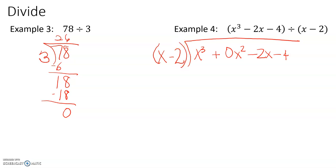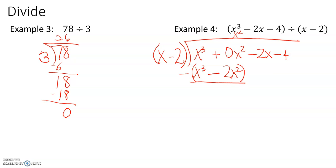We need to think: x times what is going to give us x cubed? x times x squared is x cubed. So we multiply x squared times x to get x cubed, minus x squared times 2 gives 2x squared. Put that in parentheses and then subtract. x cubed minus x cubed is 0; 0x squared minus negative 2x squared is positive 2x squared minus 2x.